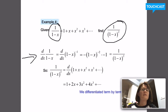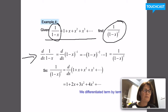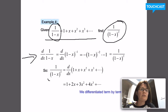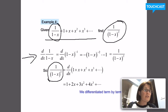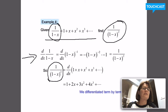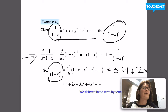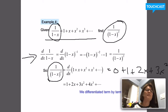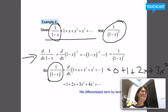Check out this next example. If I know that 1 over 1 minus x is the power series 1 plus x plus x squared plus x cubed, can I find a new power series for 1 over (1 minus x) squared? If I notice that the derivative of 1 over (1 minus x) is 1 over (1 minus x) squared, that tells me I can just take the derivative of every term of the power series to make a new power series. So imagine taking the derivative of both sides of the equation 1 over (1 minus x) equals 1 plus x plus x squared plus x cubed.